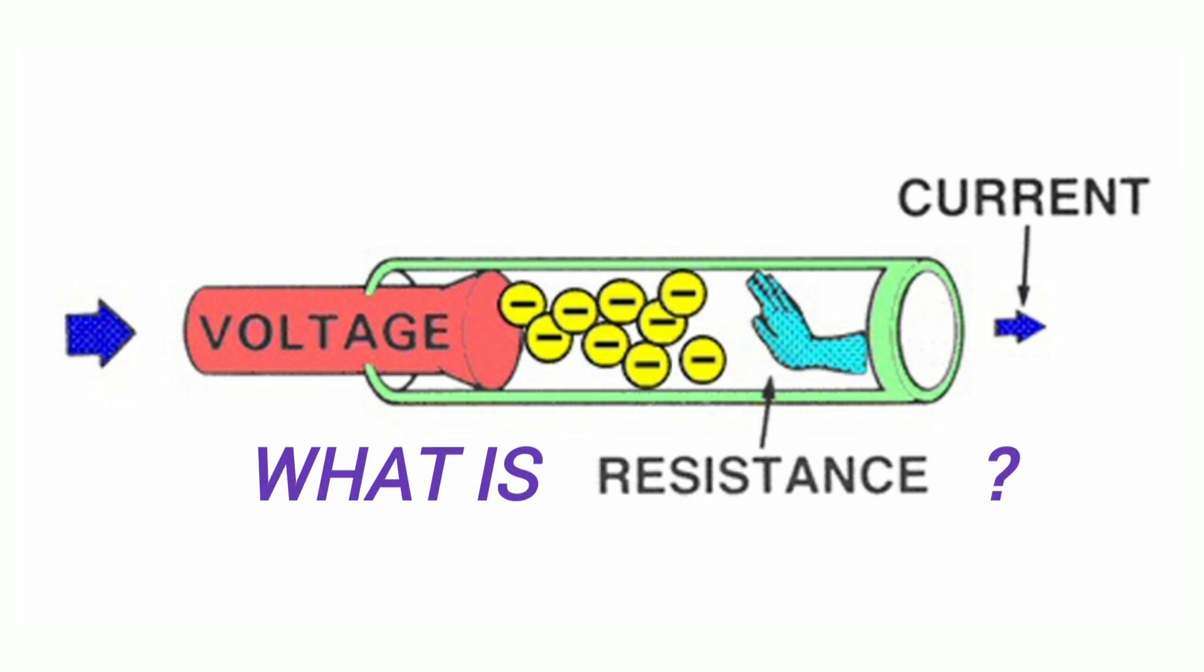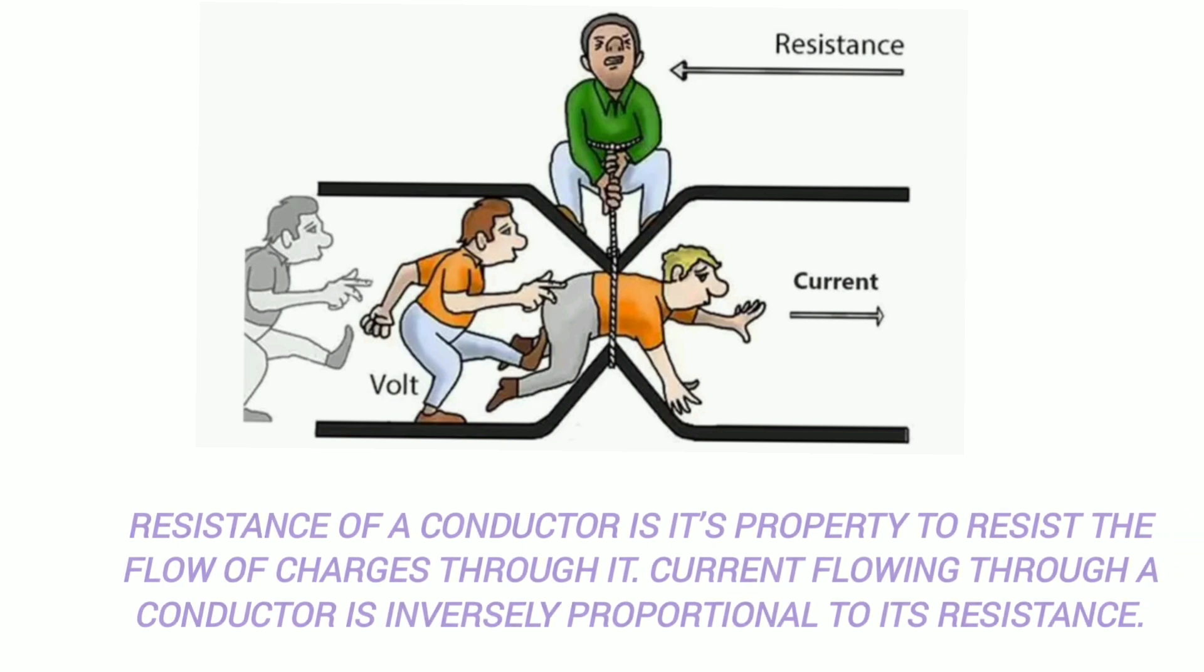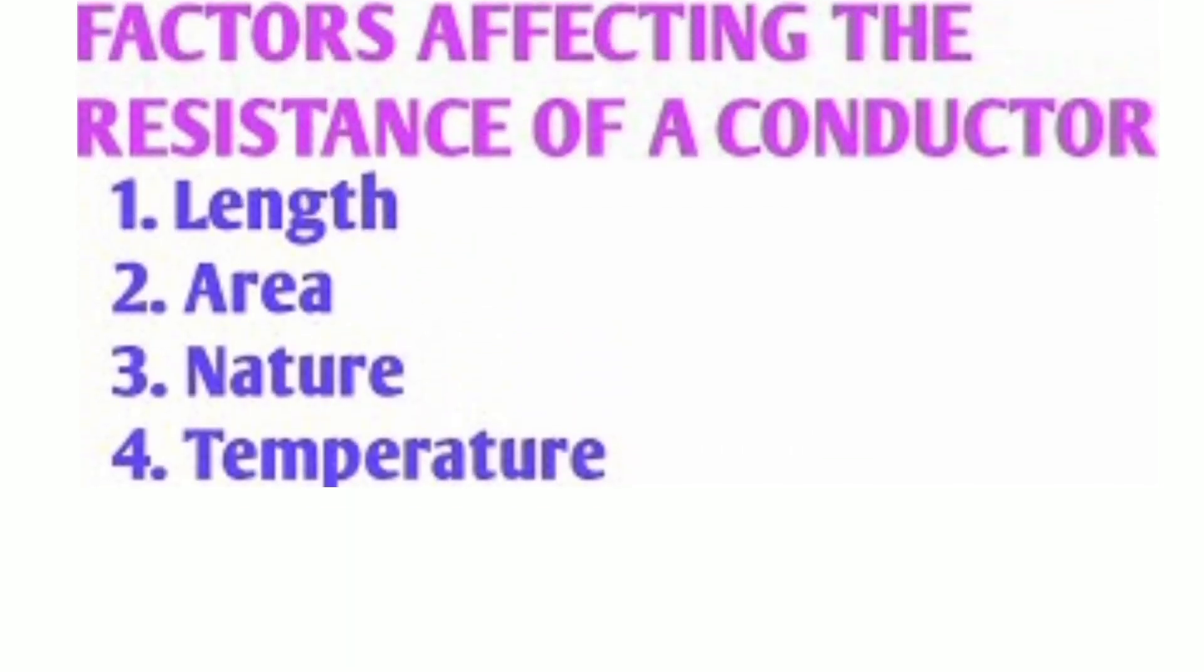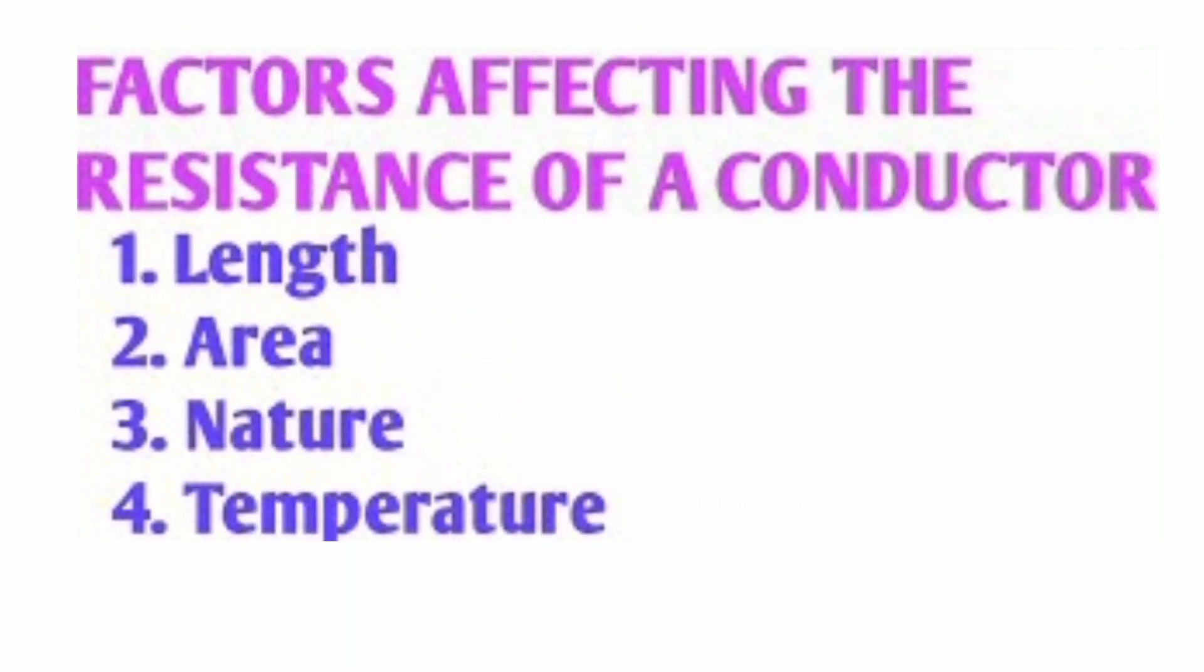What is resistance in an electric conductor? Resistance of a conductor is its property to resist the flow of charges through it. Current flowing through a conductor is inversely proportional to its resistance. Resistance of materials varies according to nature of materials, length and area of cross-section. Temperature is also a factor that affects resistance of a material.